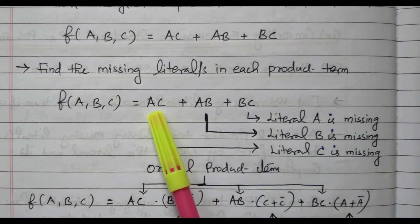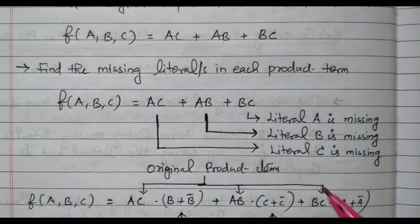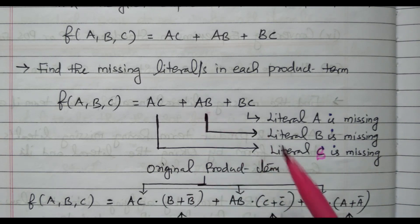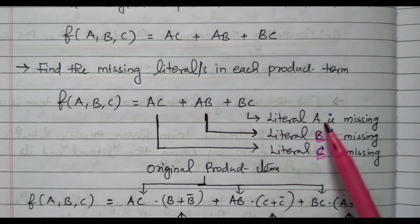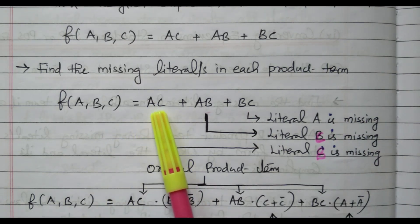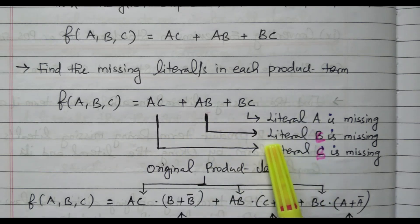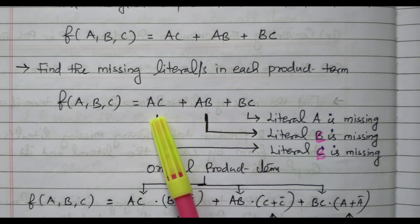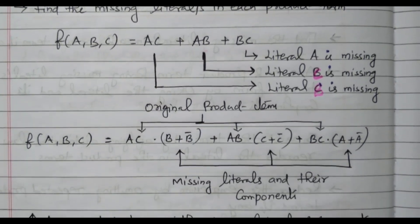F(A,B,C) = AC + AB + BC. These are three product terms all added together. In the first product term, A and C are available and B is missing. In the second term, A and B are available and C is missing. In the third term, B and C are available and A is missing. So in the first term B is missing, in the second term C is missing, in the third term A is missing. We need to multiply with the missing literals to get the standard SOP form.